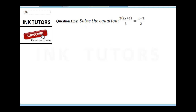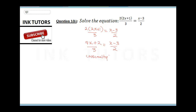Question 2 says: solve the equation. We have 2 times (2x + 1) all over 3, equals (x − 3) all over 2. Opening the brackets: 2 times 2x gives us 4x, so we have (4x + 2) all over 3 equals (x − 3) all over 2.